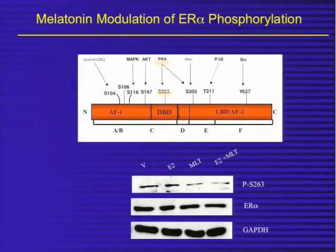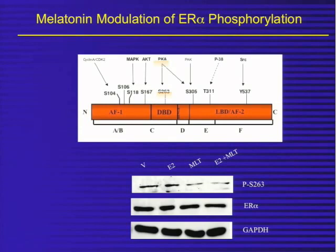New data from our lab shows that melatonin, by blocking the PKA signaling pathway, can decrease the phosphorylation of serine-263 on the estrogen receptor. Melatonin decreases it a little by itself compared to control, but if we pre-treat the cells with melatonin followed by estradiol, we significantly decrease the phosphorylation of that serine. We think that's an important role in regulating how melatonin regulates the estrogen receptor's function.